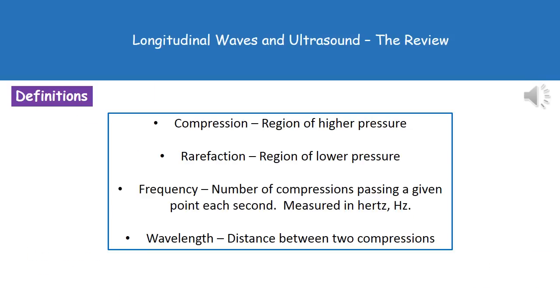There are four definitions we need to remember. First is compression, which is the region of higher pressure, where the lines are obviously going to be much closer together on our diagram. Second, the rarefaction, is the region of lower pressure, where the lines are more spaced out.